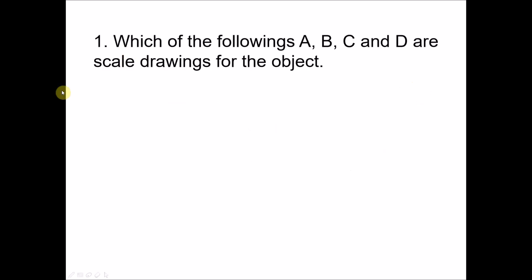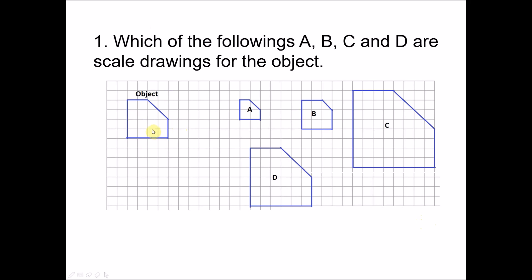Question number one: which of the following — A, B, C, and D — are scale drawings for the object? So we have the object here. In order to identify scale drawings, you need to make sure that all the sides drawn are proportional to the object. By proportional, I mean all the sides are drawn based on a certain scale, and it must be the same scale for all the sides.